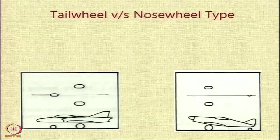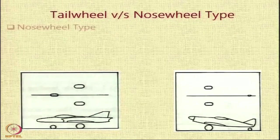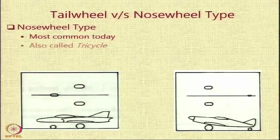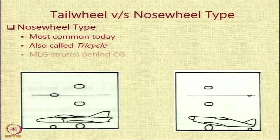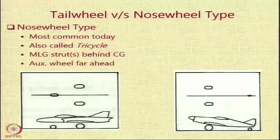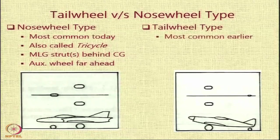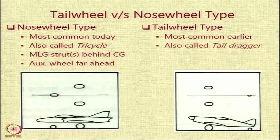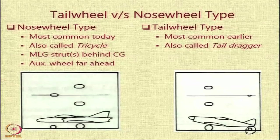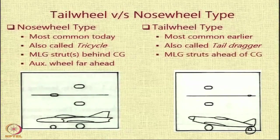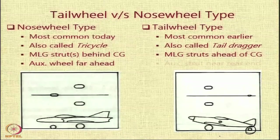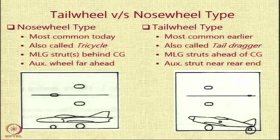The most common types today are the tail wheel and nose wheel types. The tricycle type — the most common today — has the main landing gear struts behind the center of gravity and the auxiliary wheel far ahead in the nose. Earlier, the tail wheel type was the most common configuration, also called the tail dragger type because the tail is literally being dragged behind. In the tail wheel type, the main landing gear struts are ahead of the center of gravity and the auxiliary struts are mounted near the rear end.